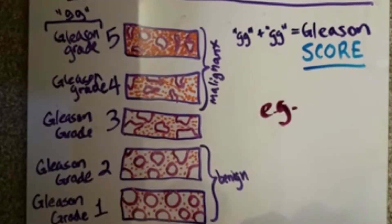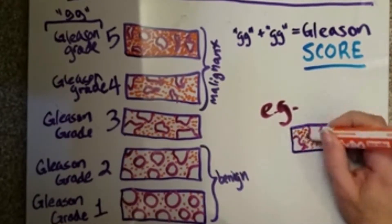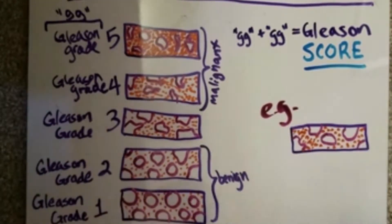You would use the Gleason score, made up of two GG's, to come up with an overall cancer grade, capital G.